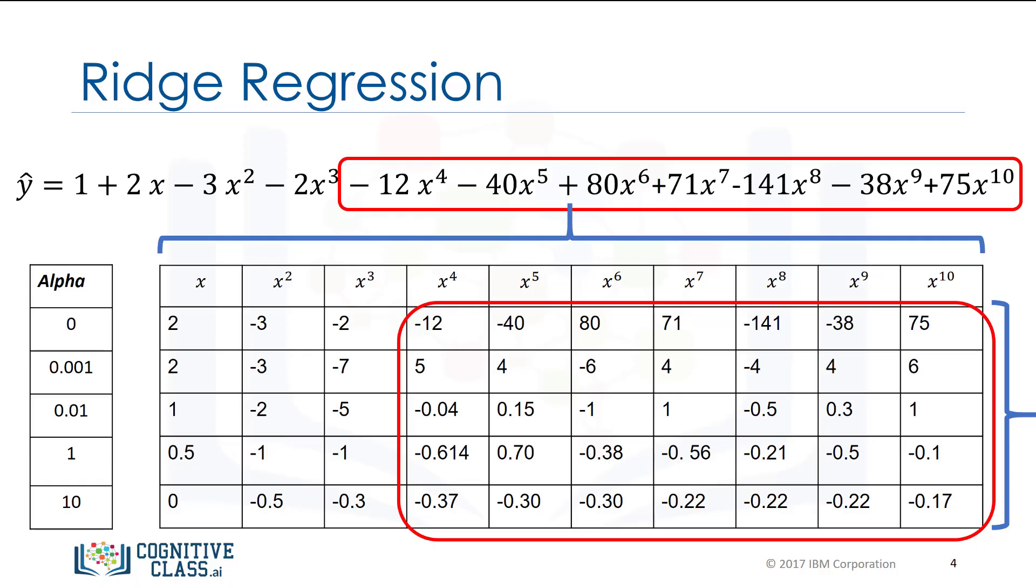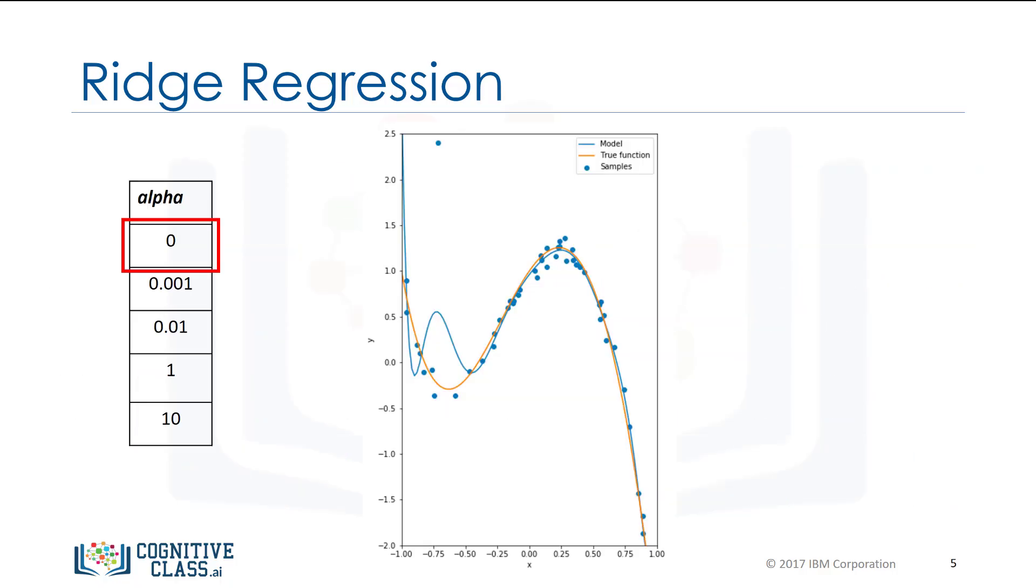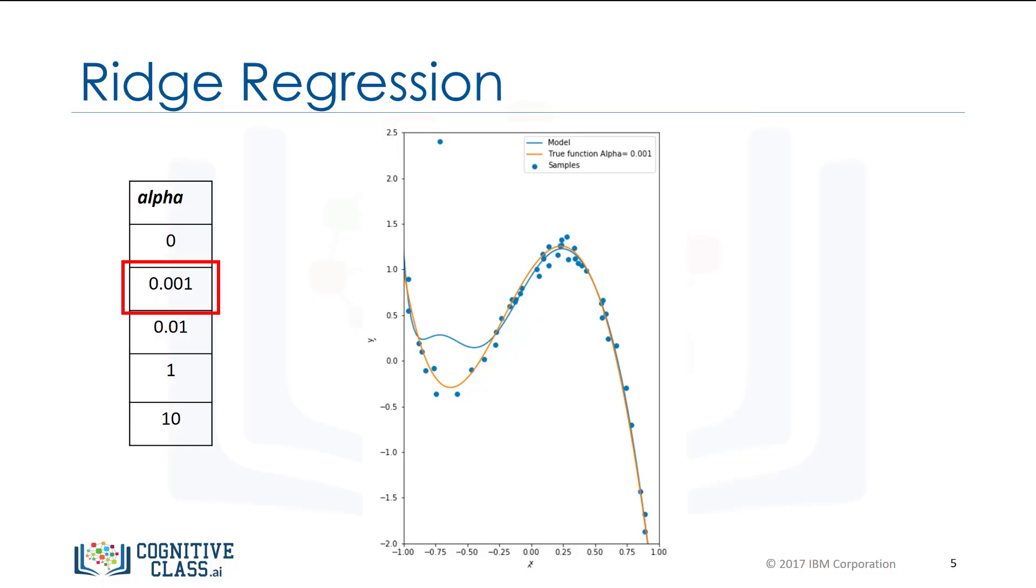If alpha is too large, the coefficients will approach zero and underfit the data. If alpha is zero, the overfitting is evident. For alpha equal to 0.001, the overfitting begins to subside.